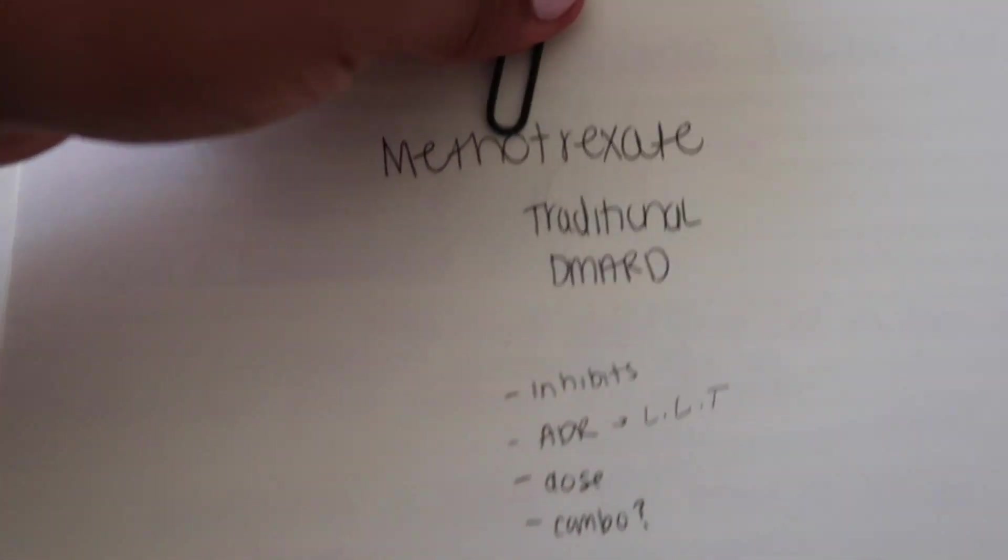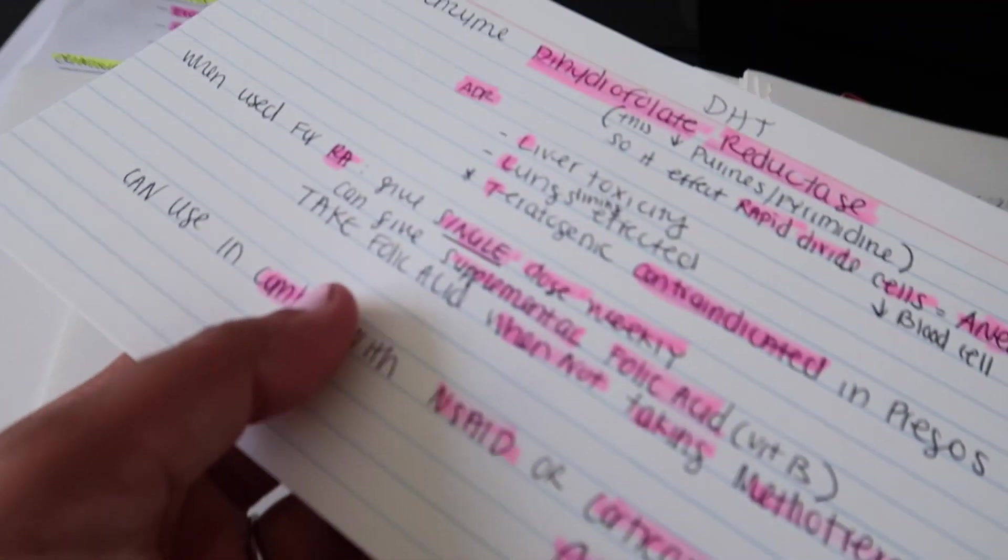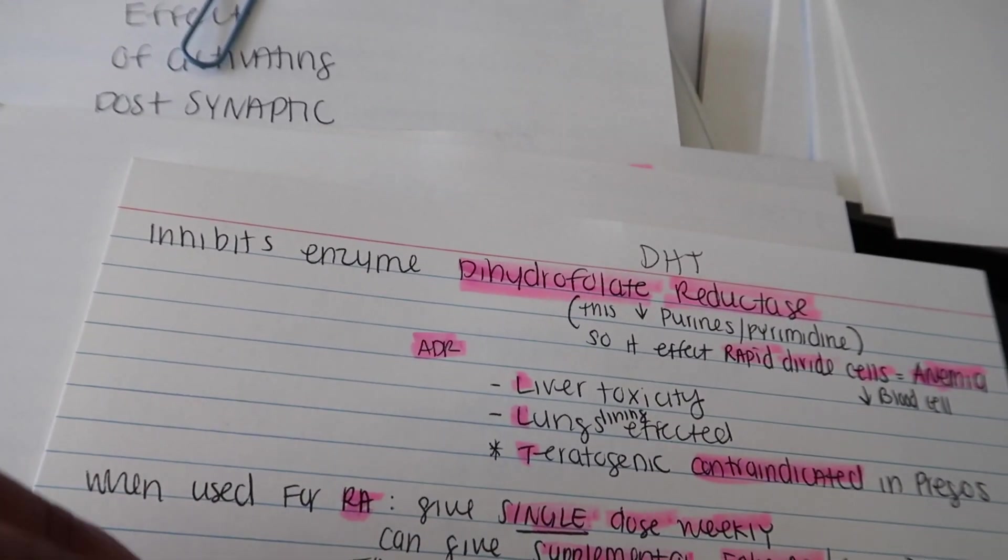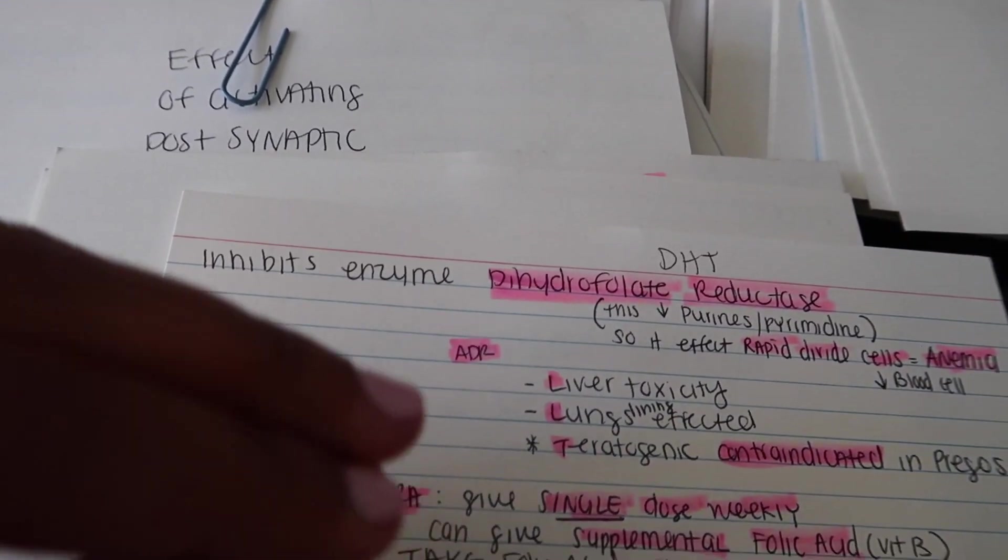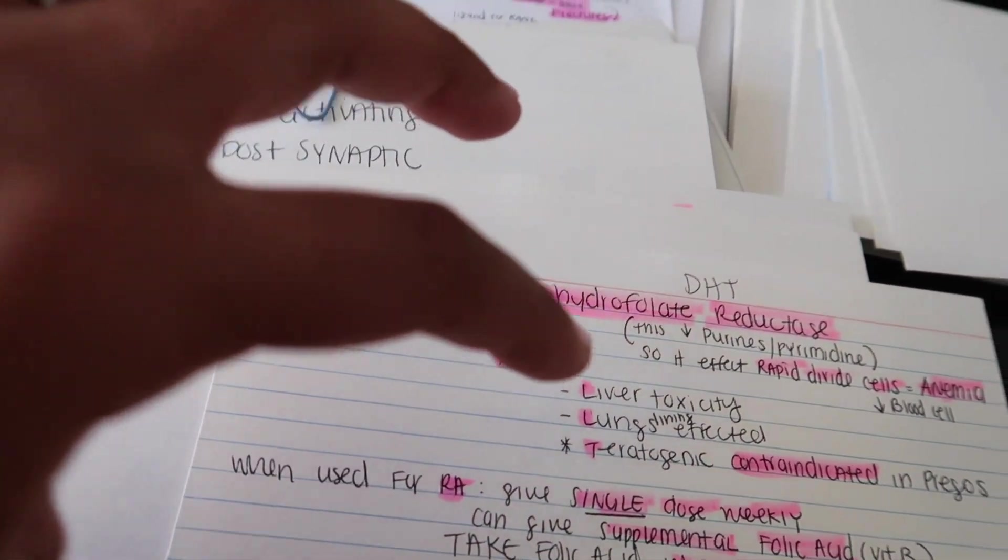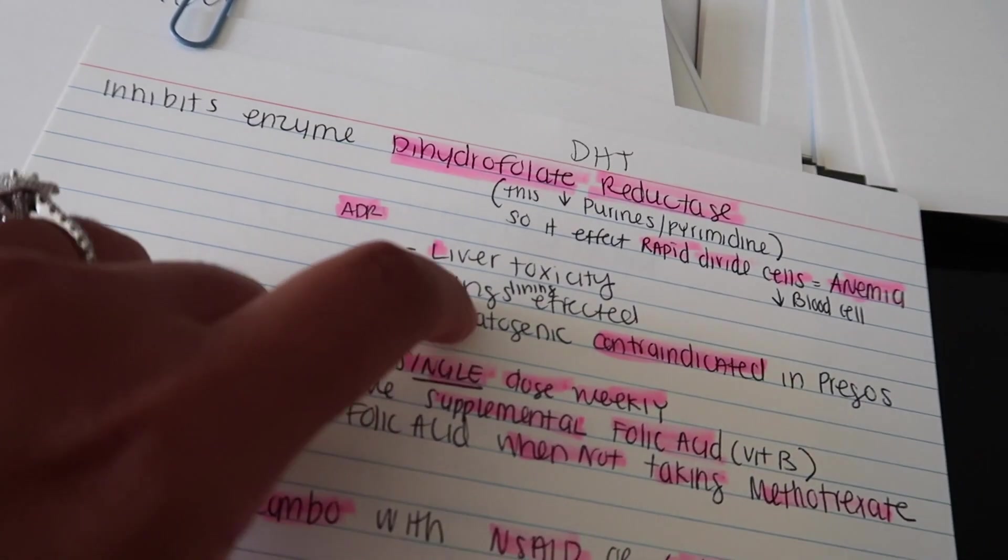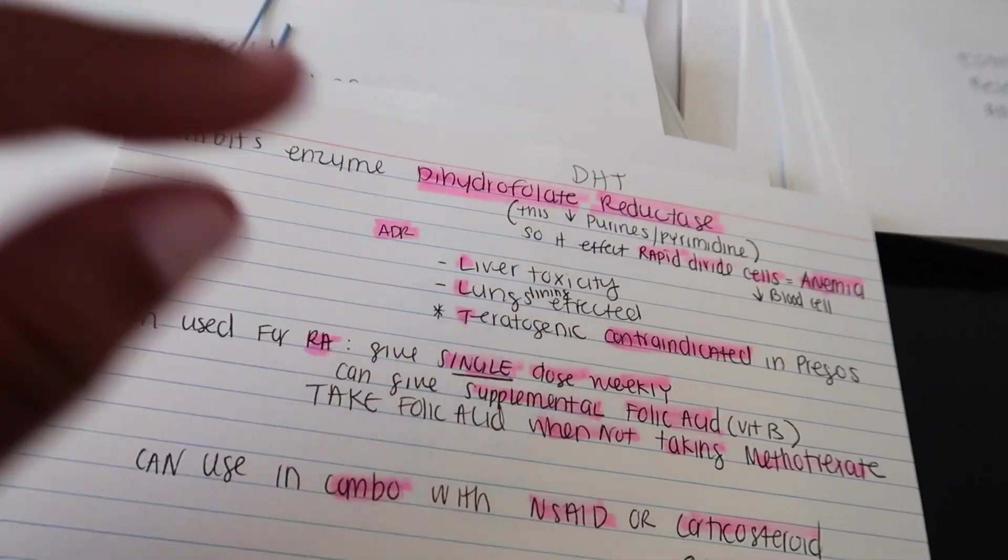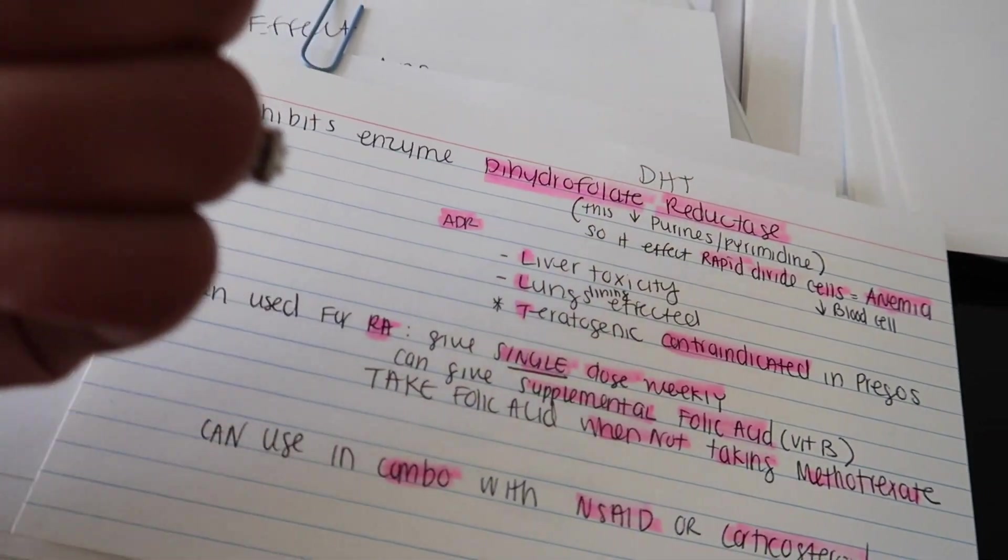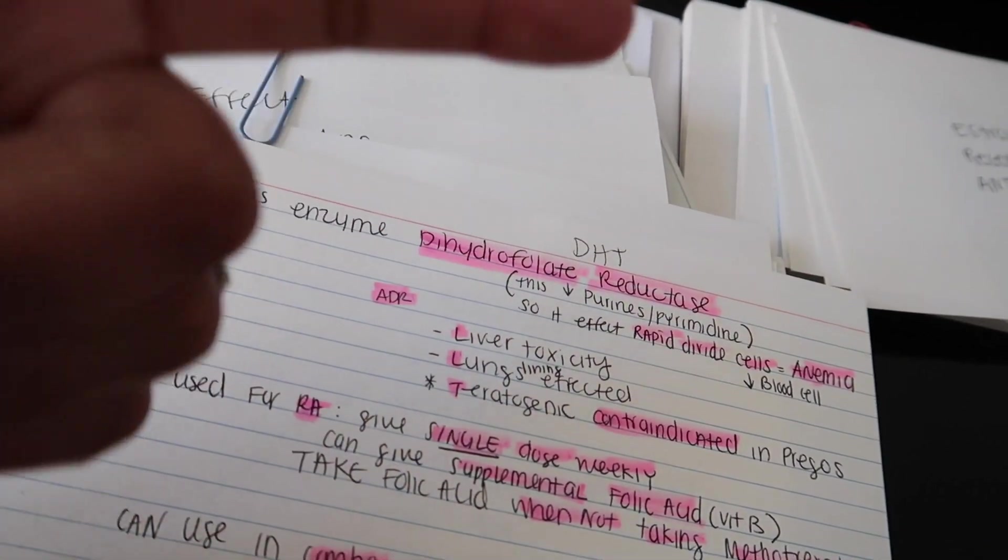You see, each flashcard probably has like 10 cards. I'll show you one of them. Methotrexate is a traditional DMARD. I would test myself because it was so much information. You have to start finding easier, quicker ways to understand and grasp all this information, because in pharmacy school every little detail counts. If you think that you don't have to know that adverse effects like pulmonary fibrosis or lung lining being affected, then you're wrong, because they love to ask about adverse effects.